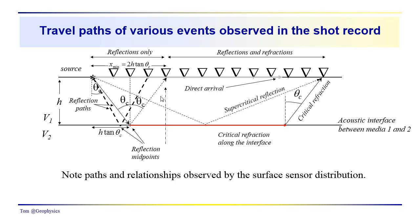We also have supercritical reflections — these are reflection events that continue to reflect at angles greater than the critical angle. Those are the wave paths and ray paths we've discussed so far.